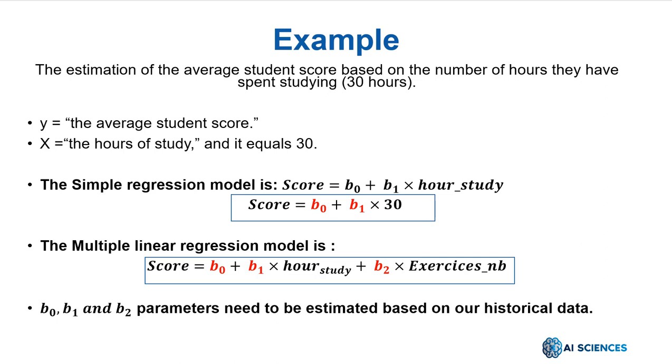Here are some examples of simple linear regression and multiple linear problems. The estimation of the average student score based on the number of hours they have spent studying, 30 hours. Please note that all the students who pass the exam will receive at least two points for their presence. In this problem, the dependent variable y will be the average student score. The independent variable is the hours of study and it equals 30. The intercept equals b0 equals 1.